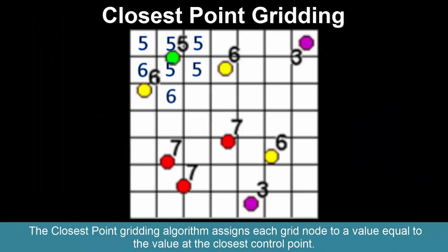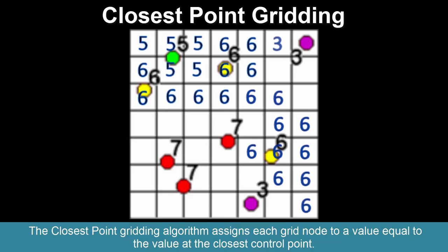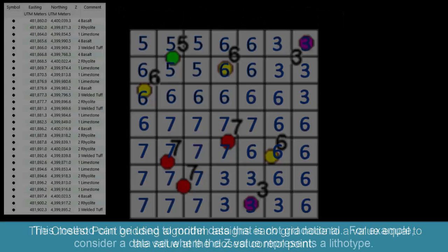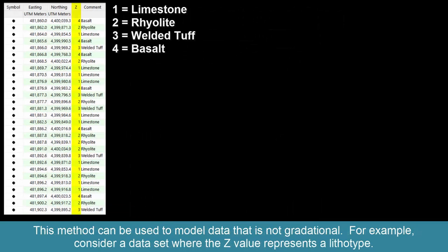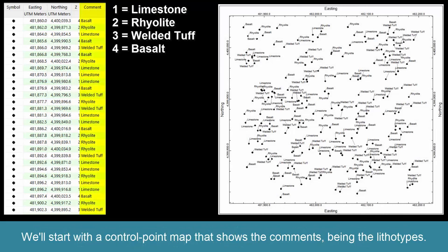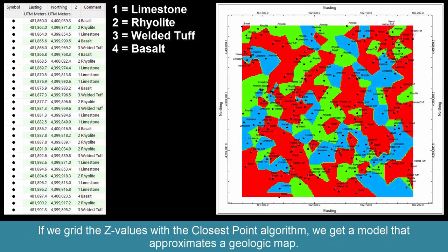The closest point gridding algorithm assigns each grid node a value equal to the value at the closest control point. This method can be used to model data that is not gradational. For example, consider a data set where the z value represents a lithotype. We'll start with a control point map that shows the comments being the lithotypes.